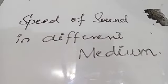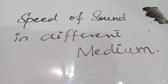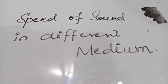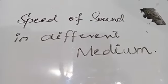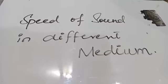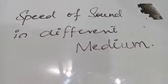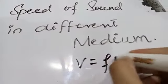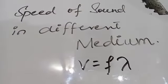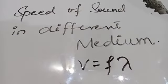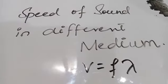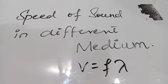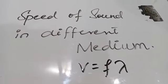The speed of sound in solids and liquids is faster than in air. The following wave equation can be used to find the speed of sound: v = f λ, where v is the speed, f is the frequency, and λ is the wavelength of the sound.